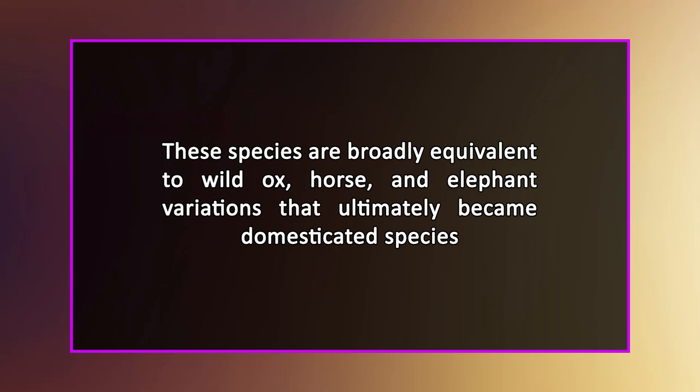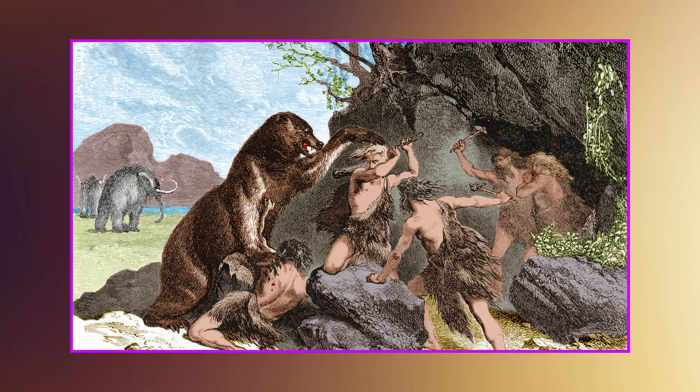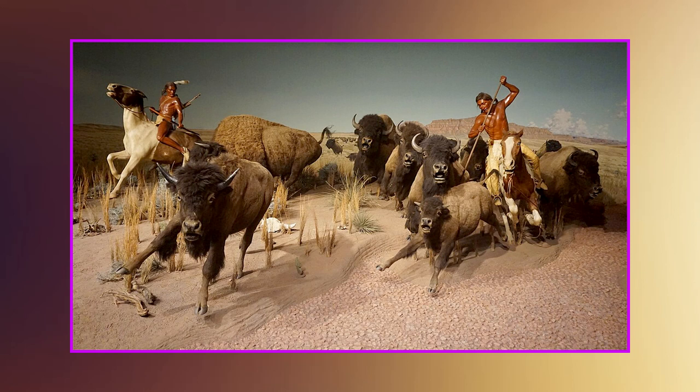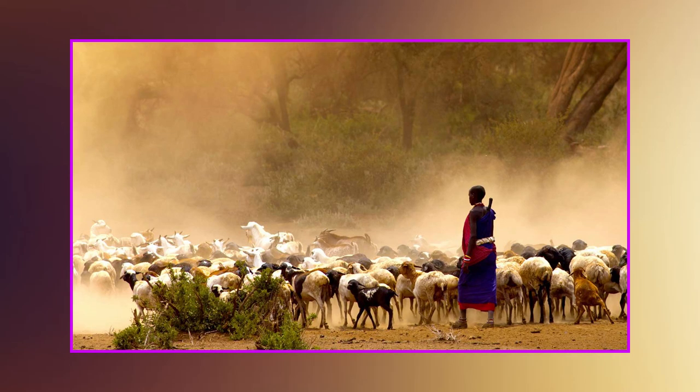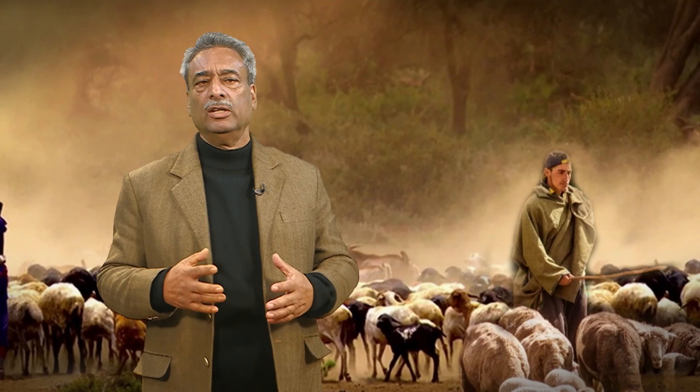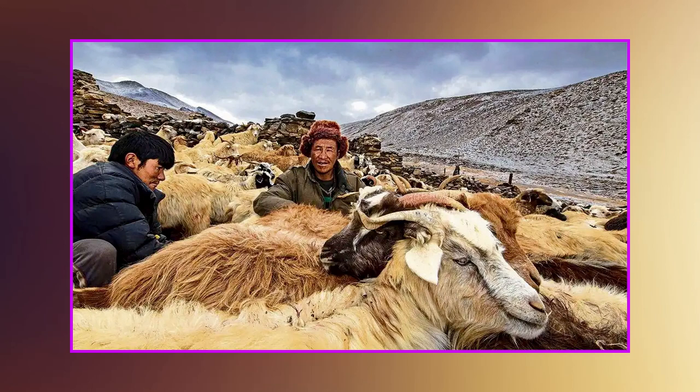These species are broadly equivalent to wild ox, horse, and elephant variations that ultimately became domesticated species. Human hunting groups frequently obtained their food from the same herd, concentrating mostly on larger members. Young members of the herd were often captured alive and kept in care. This approach appeared to have sown the seeds of animal domestication. The hunting-gathering communities had begun to focus on some species of large animals for diet, and wild sheep and goats were heavily hunted during this period.